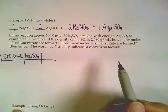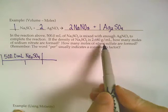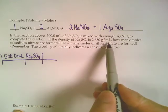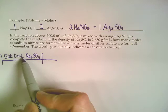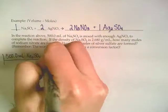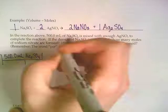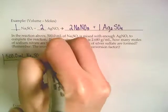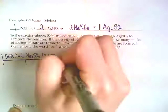The way that we know of is to use the density that's provided. In order to get those milliliters to cancel out, we could put the milliliters part on the bottom, and then the 2.680 grams can go on the top.